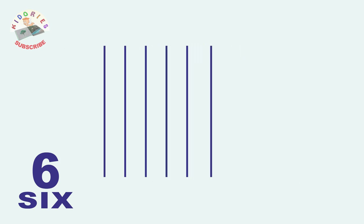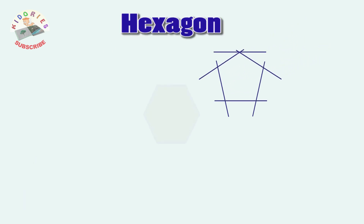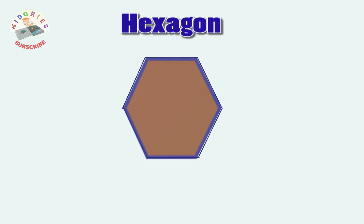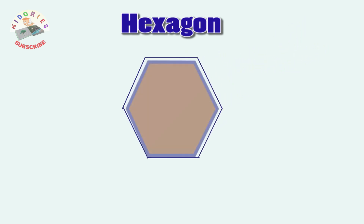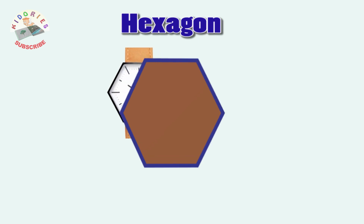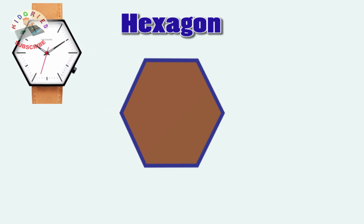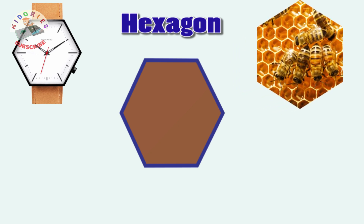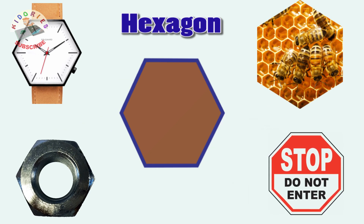Six lines, six lines make a hexagon. Hexagon shape represents a beehive, a bolt, a hexagon shop, and a hexagon shaped watch.